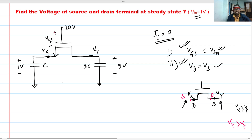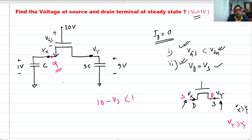In this condition, the source voltage can be maximum 9 volts, since our vg is 10 volts — vs max can be 9 volts. But we have two capacitors present, so we can use the charge sharing condition so that this voltage will equal this voltage.